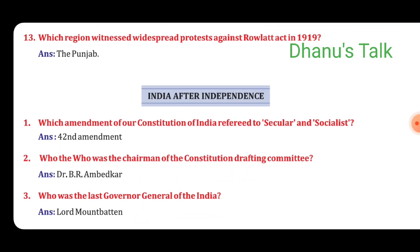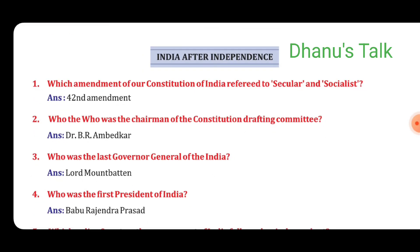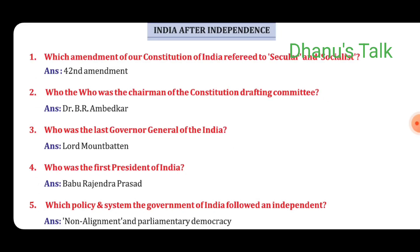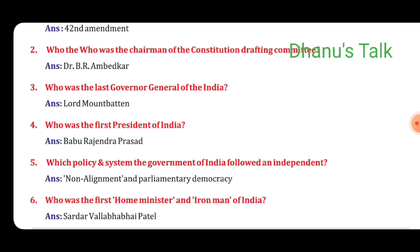India after Independence. Question No. 1: Which amendment of the Constitution of India referred to 'secular' and 'socialist'? Answer: 42nd Amendment. Question No. 2: Who was the chairman of the Constitution Drafting Committee? Answer: Dr. B.R. Ambedkar. Question No. 3: Who was the last Governor-General of India? Answer: Lord Mountbatten. Fourth question: Who was the first President of India? Answer: Babu Rajendra Prasad.